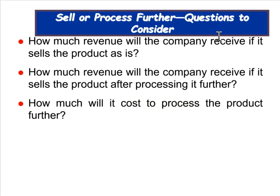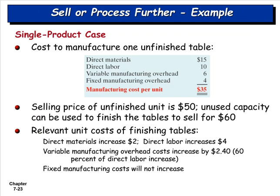Questions to consider: How much revenue will the company receive if it sells the product as-is? How much if it sells after processing further? And how much more does it cost to process further? For example, the company manufactures unfinished tables — no paint or varnish — at a cost of $35 per unit and sells them for $50.